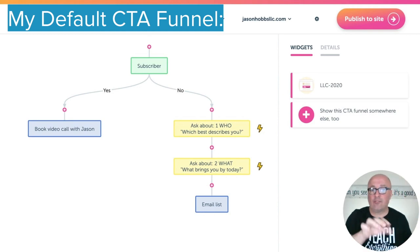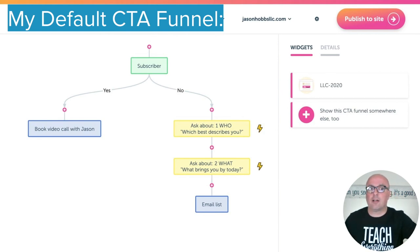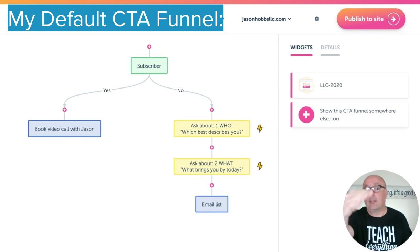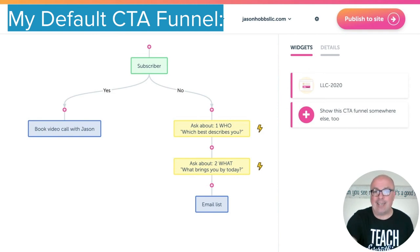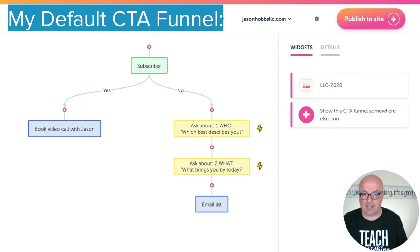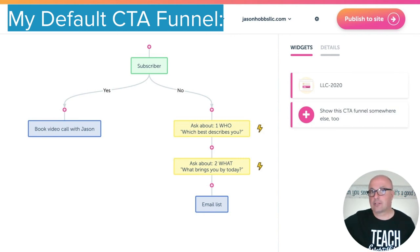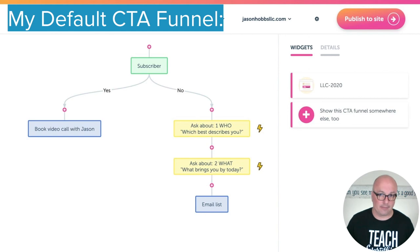This specific funnel deals with that exact problem. The very first thing it does is ask: is this person already a subscriber? If they are already a subscriber, it takes them to my second offer, which is to book a video call with me. However, if they're not, it takes them through the first two questions and then makes my first offer, which is to join my email list. The little lightning bolts beside the who and what questions indicate they're synced up with my email service provider, ConvertKit — I have a custom field in ConvertKit that pipes in that information automatically.